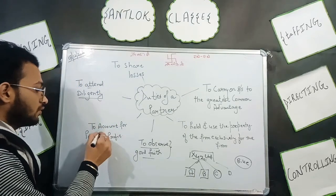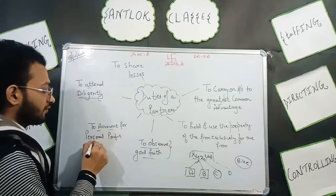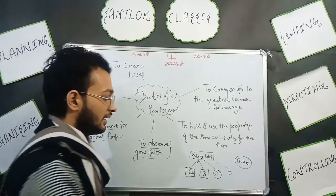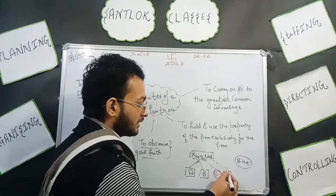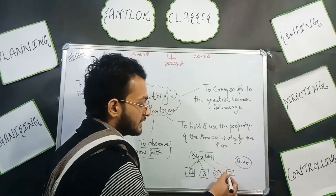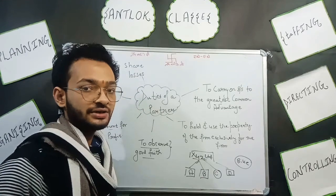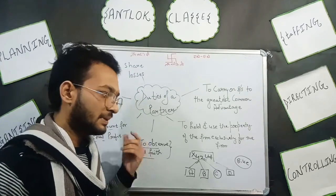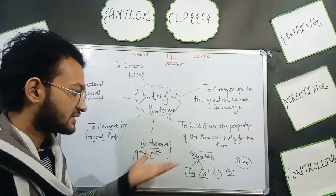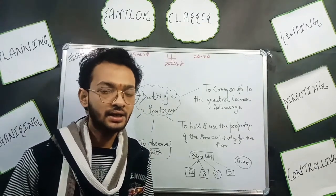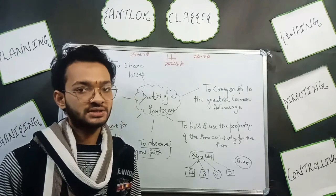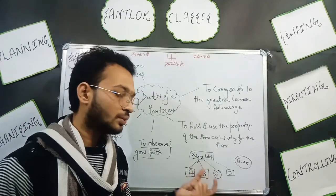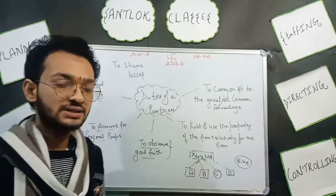Next, we have to account for personal profit. This means that if Partner D has some financial transactions which generate a profit of 10,000 rupees,